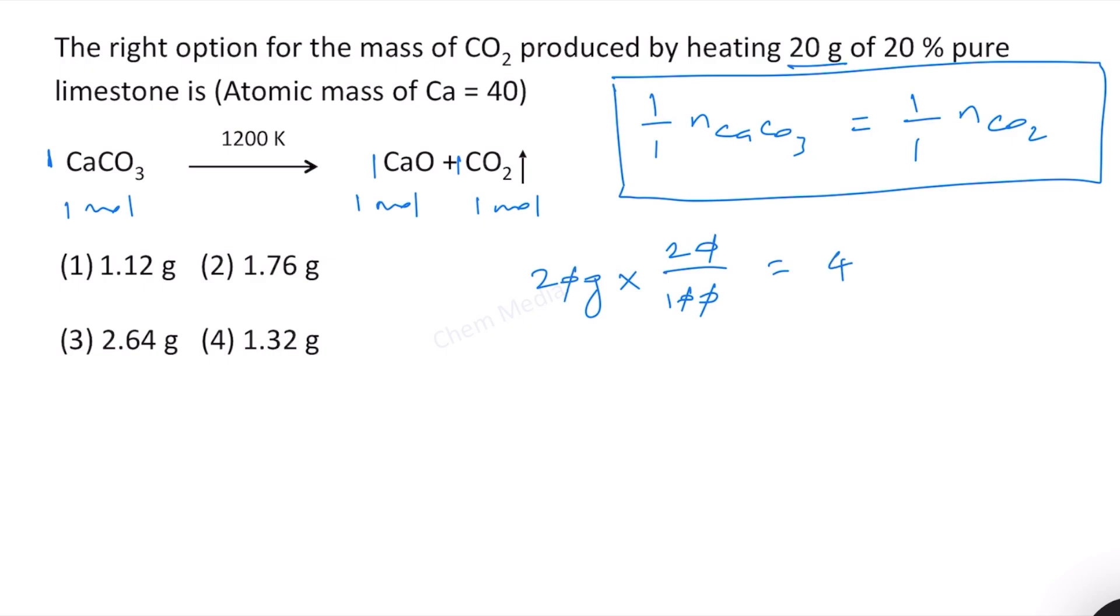If it is 100% pure then it should have 20 grams of calcium carbonate, but it is not 100% pure, it is only 20% pure. And therefore the original amount of calcium carbonate that is there is only four grams. And we know that number of moles is equal to mass divided by molar mass.